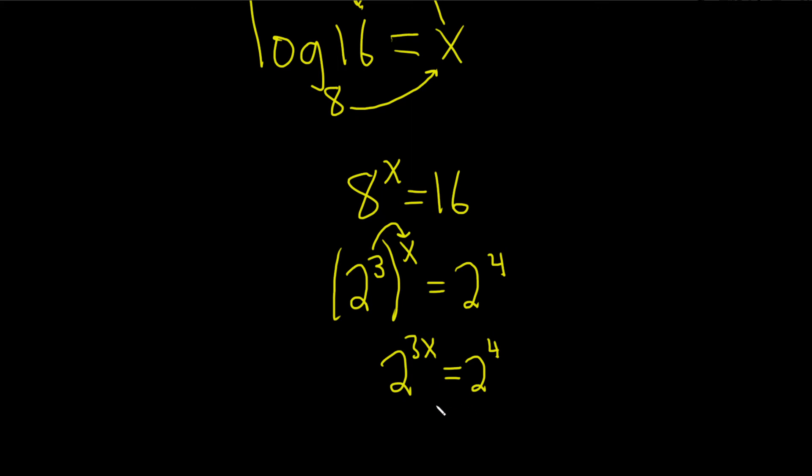And because the bases are the same on both sides we can drop the bases. So we set the exponents equal. So we have 3x equals 4.